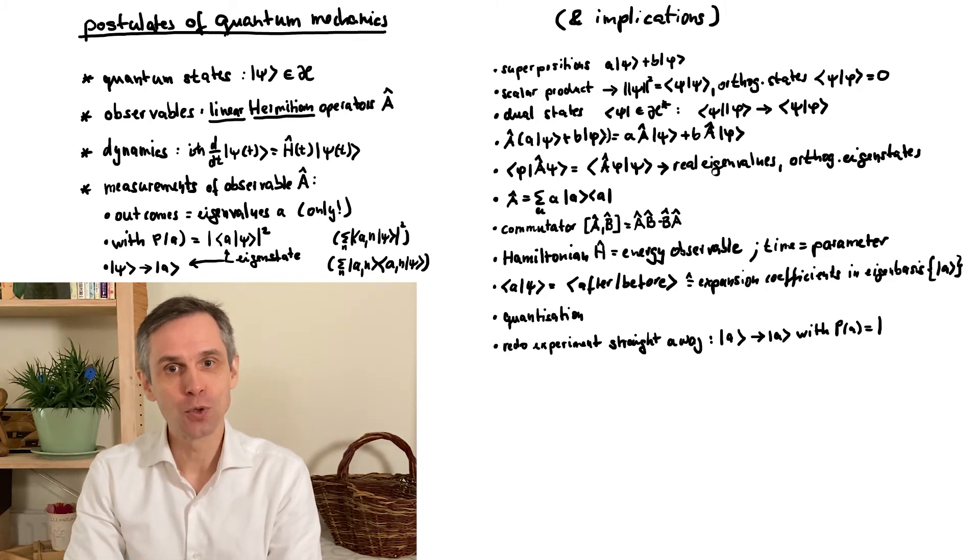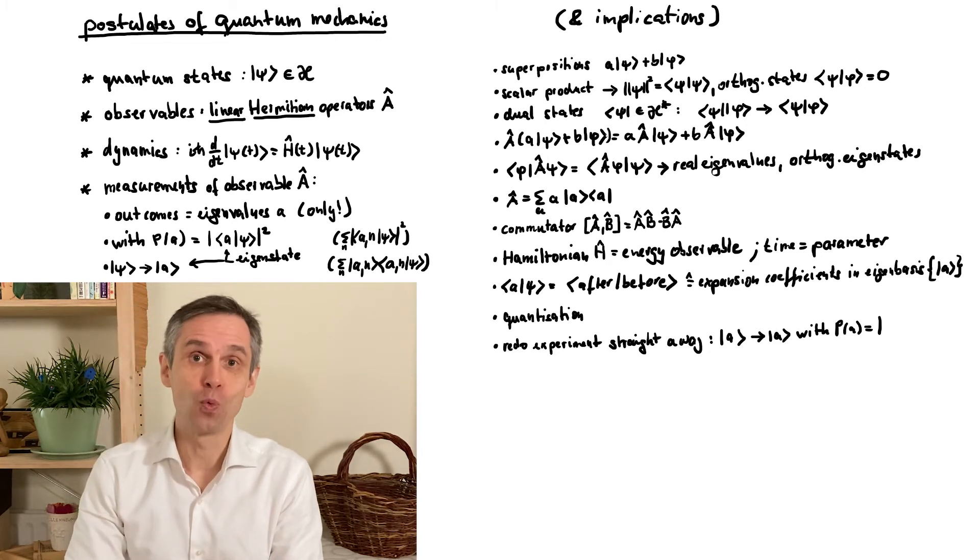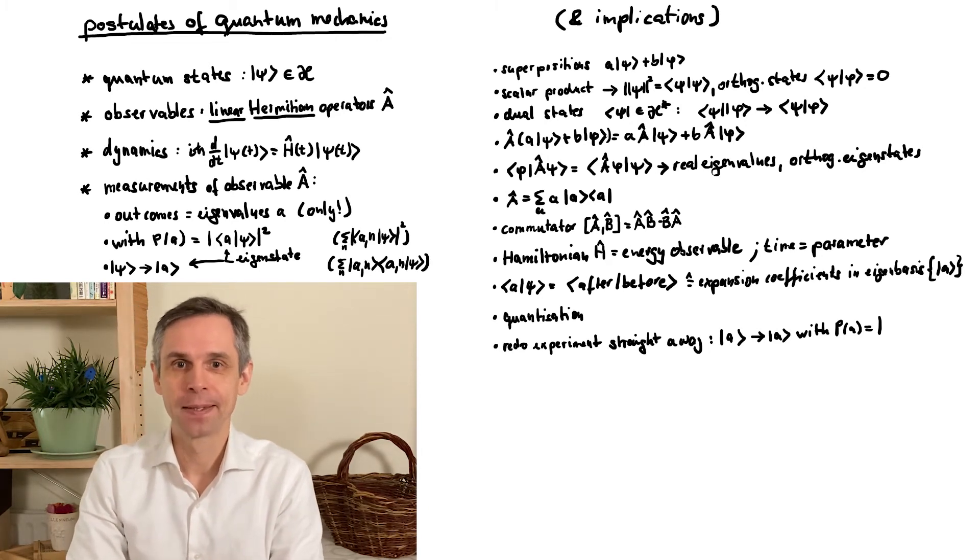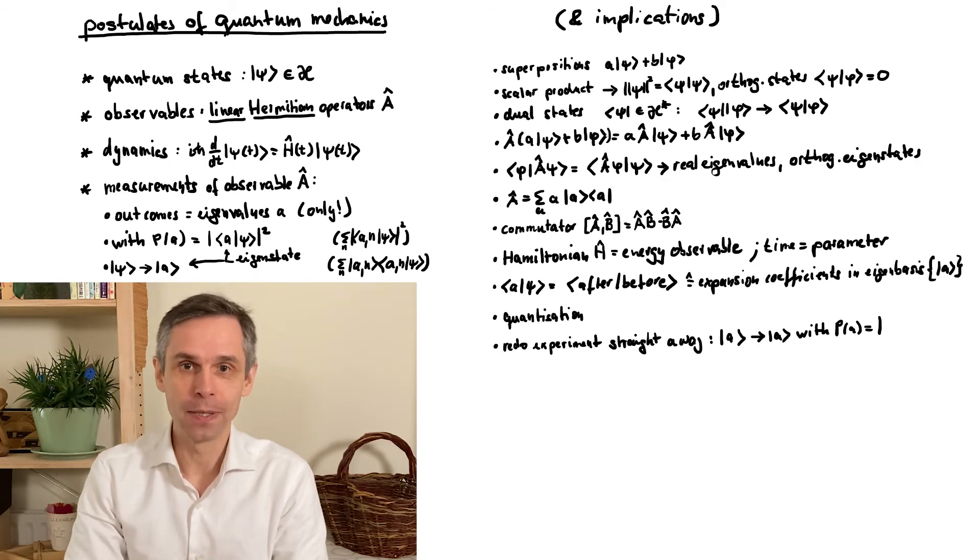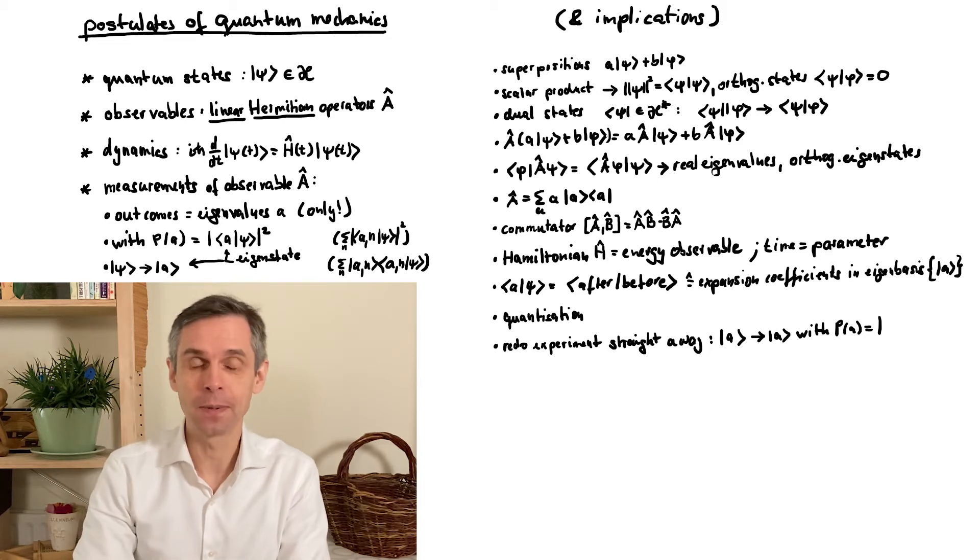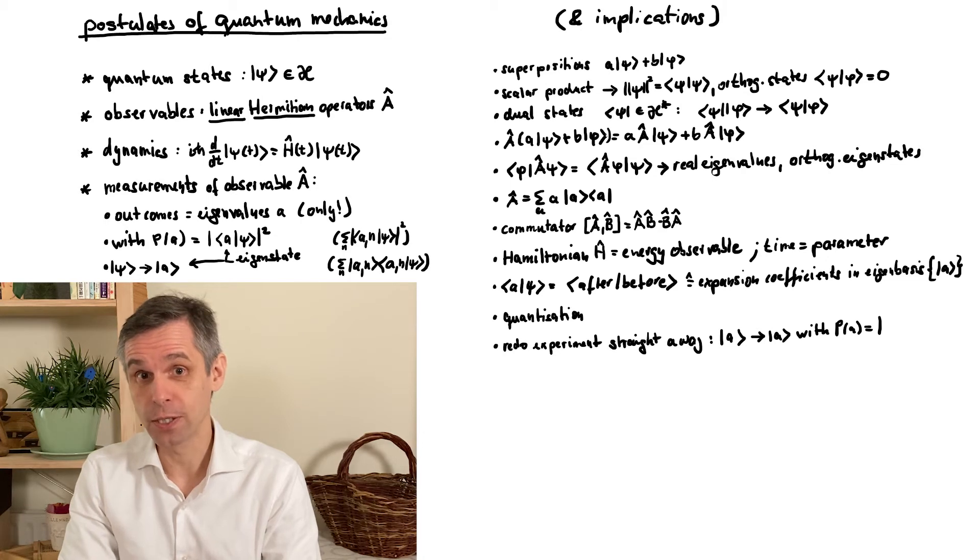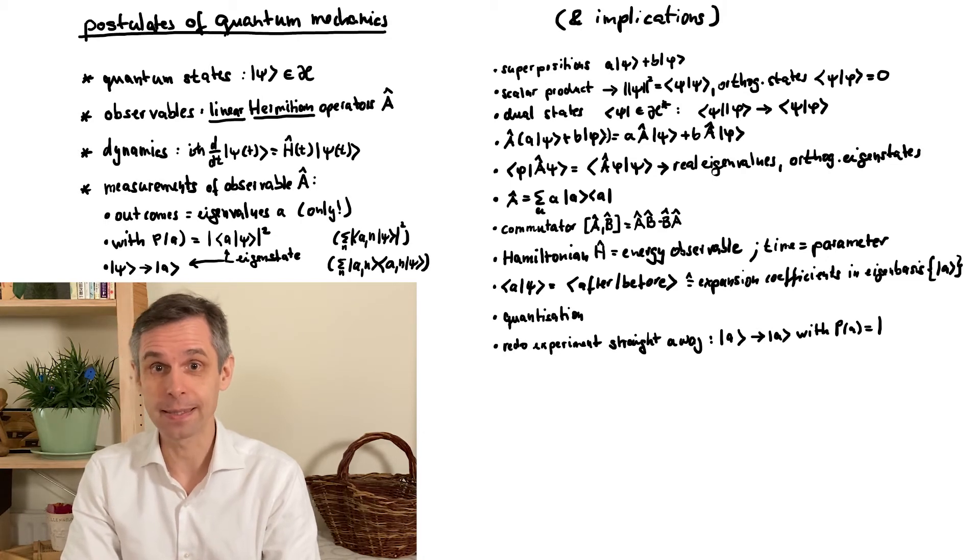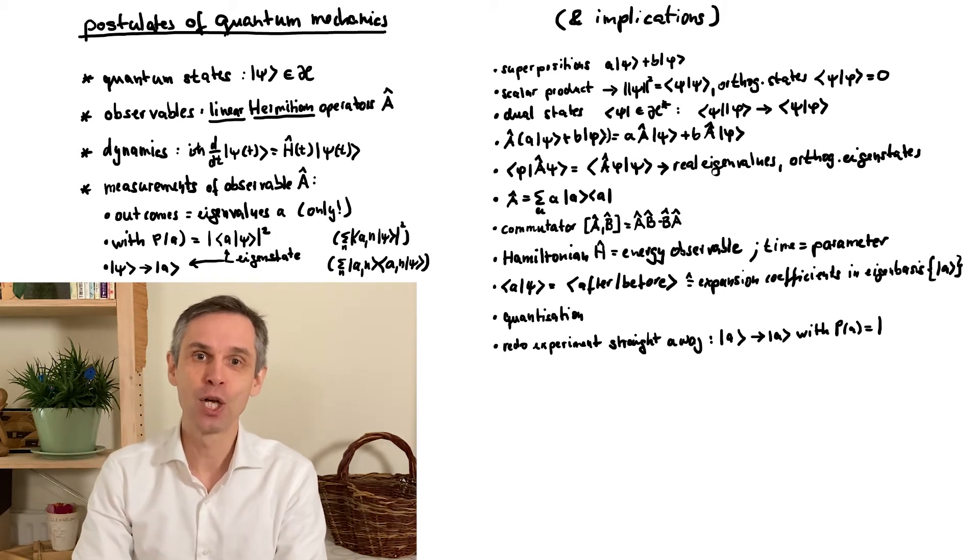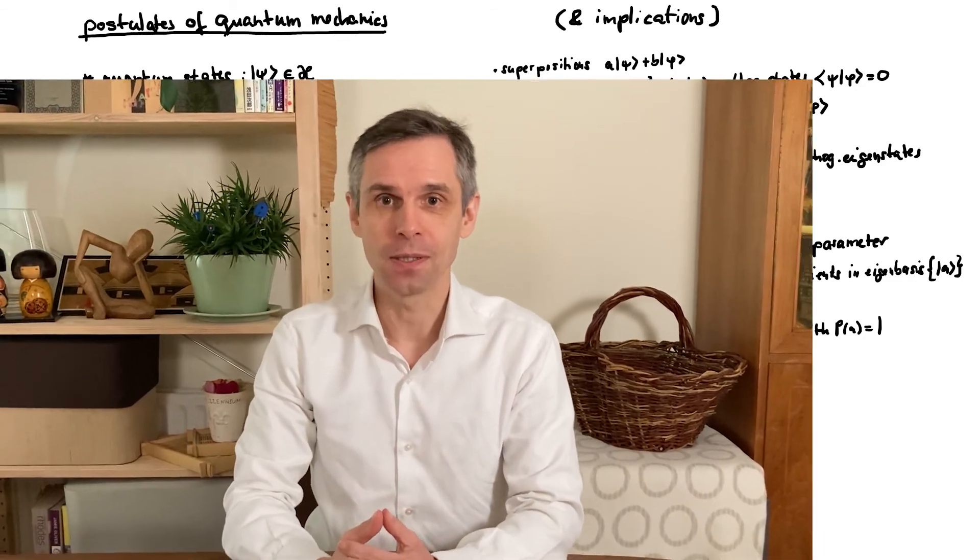Why do we need to replace the dynamics of the Schrödinger equation by something else when we do a measurement? As a matter of fact, as mentioned, you can include the measurement apparatus in your description. And you then find that its state becomes strongly correlated with the quantum system. This is really good. It's actually a manifestation of a quantum phenomenon that we will discuss later: entanglement, the arguably deepest and most fascinating of all quantum phenomena. And this observation really explains a lot.